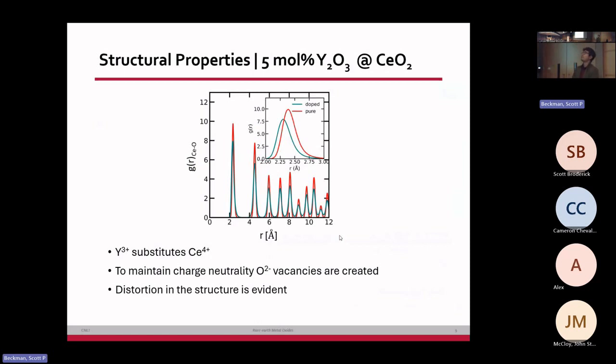We also started off doping the ceria with 5% yttria. The yttria 3+ ions occupy the sites of the ceria 4+, and to maintain charge neutrality, oxygen vacancies are created at random. From the RDF for the ceria and oxygen distance, we have seen there has been significant difference in the peak position, meaning that these ceria and oxygen interactions are different from what they would have been in pure ceria when doped with yttria.